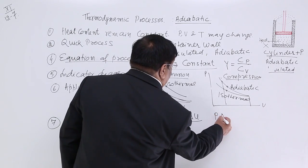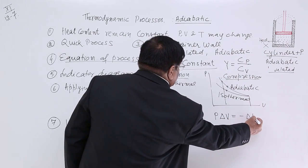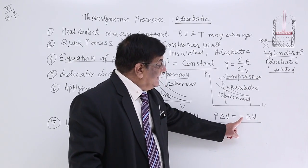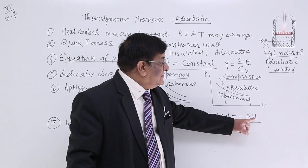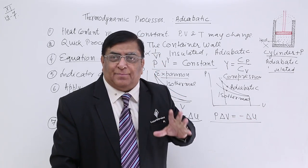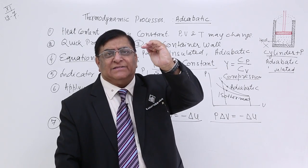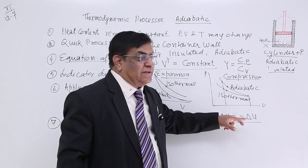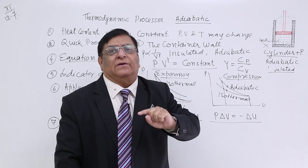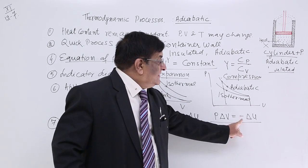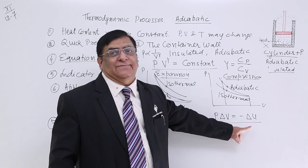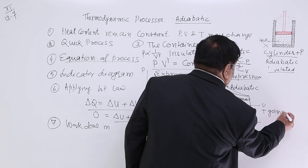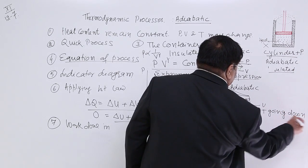What do we write delta W equal to? Delta W is P into delta V is equal to minus delta U. What does this mean? How do we know that internal energy has decreased? The indicator for change in internal energy is its temperature. If internal energy increase, positive, the temperature is increasing. If internal energy is negative, that means the value is coming down, that means temperature is coming down. So, this says, the gas is cooling, T going down, and the gas cooling.